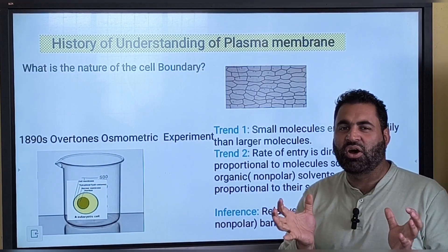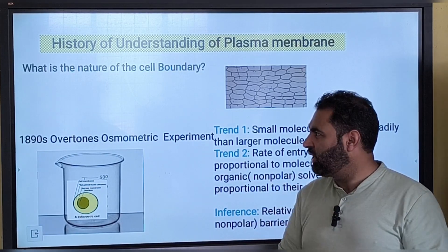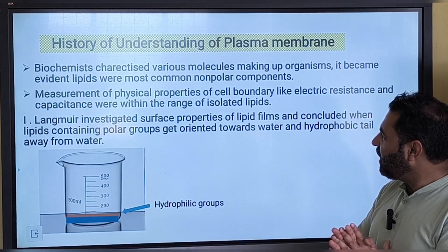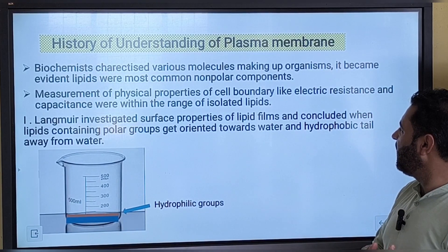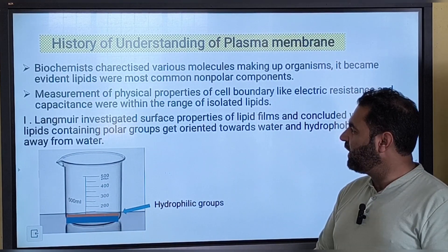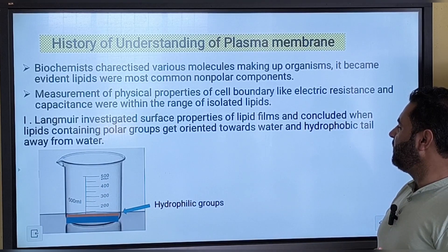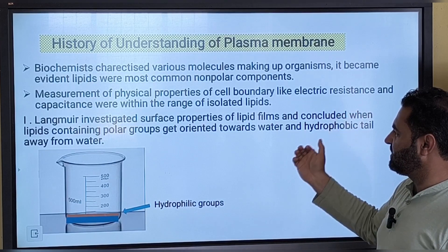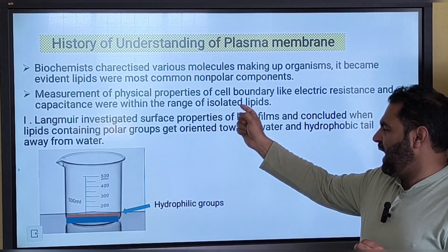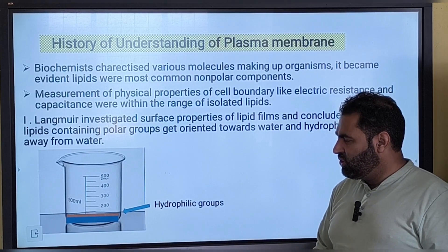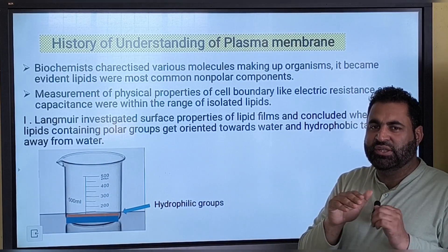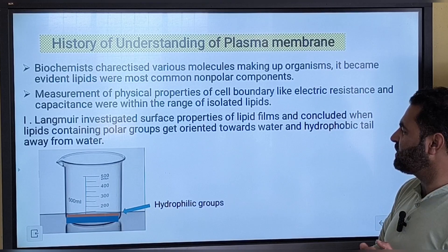Then it was an era of biochemistry. Biochemists isolated different molecules from cells — lipids, proteins, carbohydrates. They measured the physical properties of these molecules, like electrical resistance and capacitance, and found that these properties of the cell membranes were in the same range as those of isolated lipids. So the physical properties of biomolecules and cell membranes were somewhat identical.